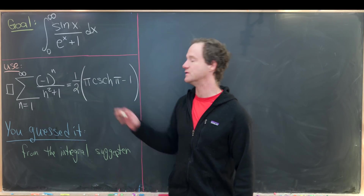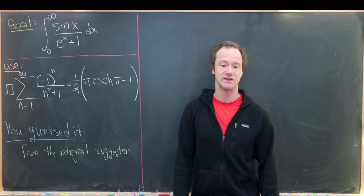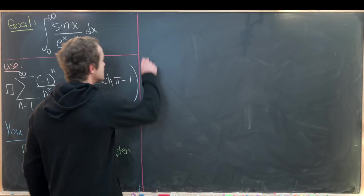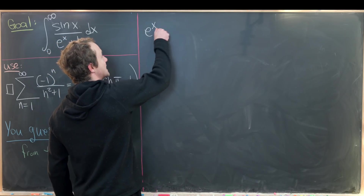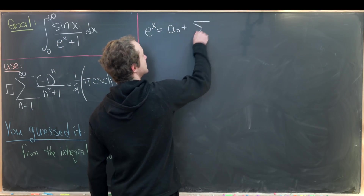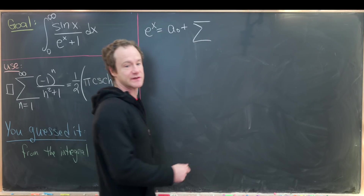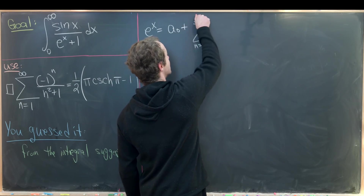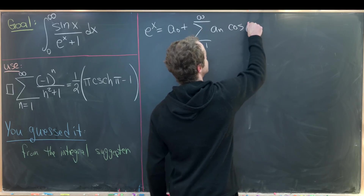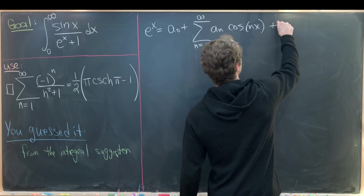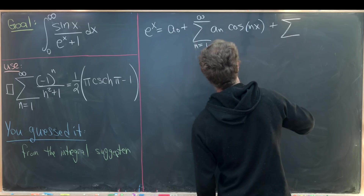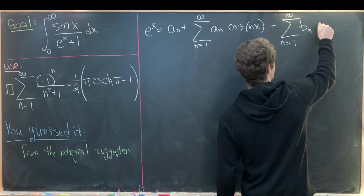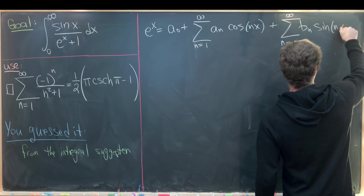We will derive this using the Fourier expansion of e to the x. We can write e to the x as a₀ plus the cosine sum — the sum as n goes from 1 up to infinity of aₙ cosine nx — plus the sine sum, the sum as n goes from 1 up to infinity of bₙ sine nx.